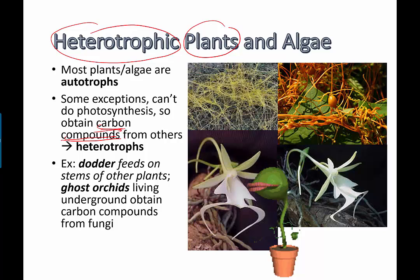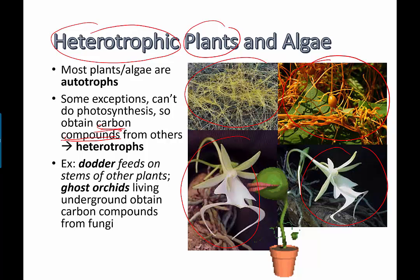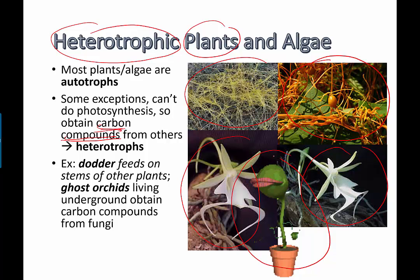Some examples are here, and you can find more in the textbook and online. Dodder plants basically feed on the stems of other plants. Then you have these cool looking things — ghost orchids that live underground and obtain their nutrition from a mutualistic relationship with fungi. And the most obvious of the heterotrophic plants are the ones that fascinated me as a kid: Venus flytraps and pitcher plants, which can actually obtain their nutrition from the dead bodies of insects — and in some cases, really large pitcher-type plants can get their nutrition from small mammals.